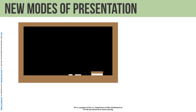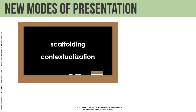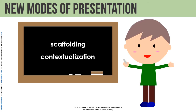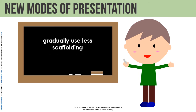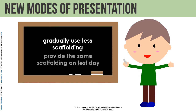New modes of presentation: in class, you probably offer a lot of scaffolding and contextualization. If the first time you take that away is during a test situation, your students may not know what to do. For example, if you are a teacher who uses a lot of gestures when talking, but on test day you stop using hand gestures, this could be too much of a difference for students. You should either gradually use less and less scaffolding in class as you approach a test date, or you should provide the same kind of scaffolding to students on the test day as you do during regular class.